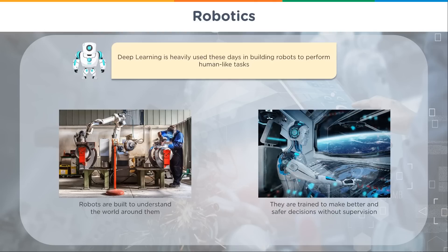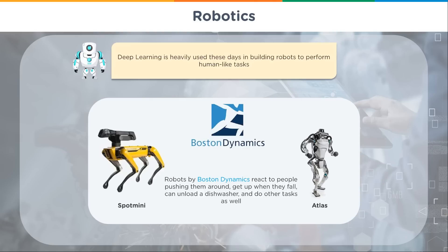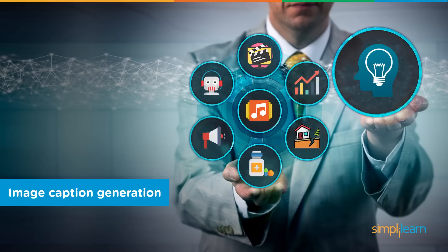Boston Dynamics' Spot Mini and Atlas robots can react to people pushing them, get up when they fall, unload a dishwasher, and perform other tasks. We're starting to see this kind of robotics coming into the home. Atlas is a very expensive robot, but there are more common ones you can bring into the house. Spot Mini is fun to watch run — it moves quite fast.